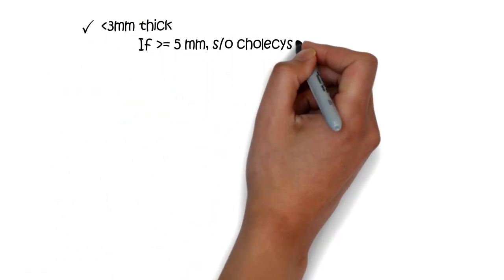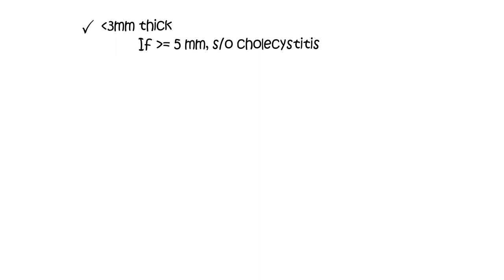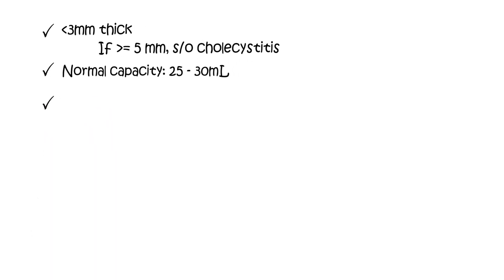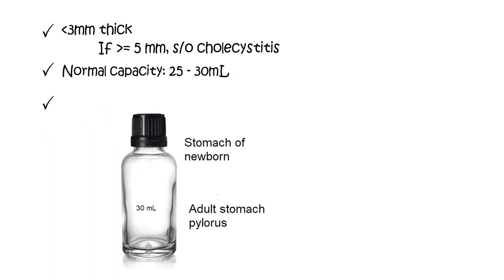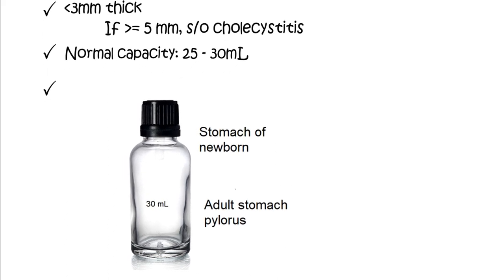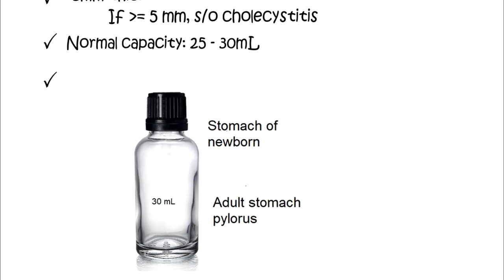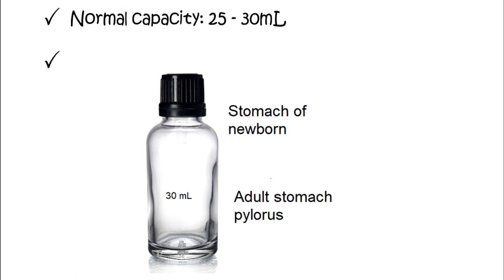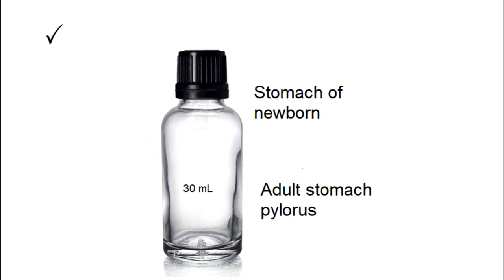The thickness of the gallbladder wall is less than 3 mm; if it is more than or equal to 5 mm, it is suggestive of acute cholecystitis. The normal capacity of the gallbladder is 25–30 ml, but when markedly distended it can enlarge up to 10 times its normal capacity, that is 300 ml. Structures with 30 ml capacity include the stomach of a newborn human baby, and the adult pyloric capacity which also equals 30 ml.